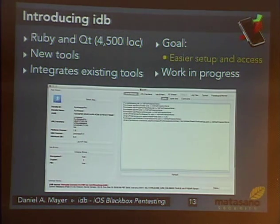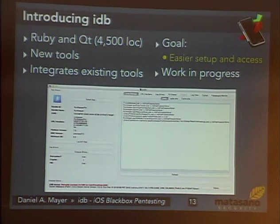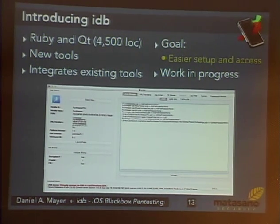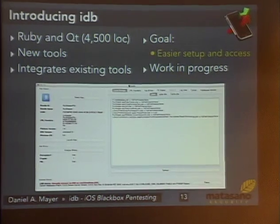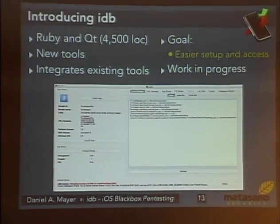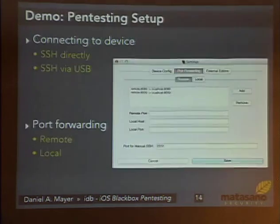IDB started off as a command line tool written in Ruby just to find interesting files in apps. Then I decided to extend it and put a GUI in front of it so that you have a better overview of what the application does. It integrates some of the existing tools which are out there already, but there are also some new features which I hope will be useful and hopefully find some new bugs. The goal was to just make it easier to work with all these things.